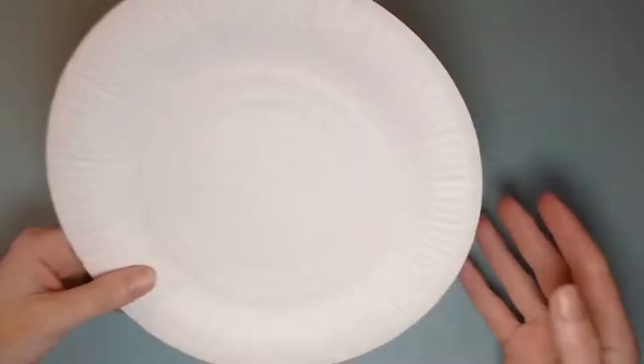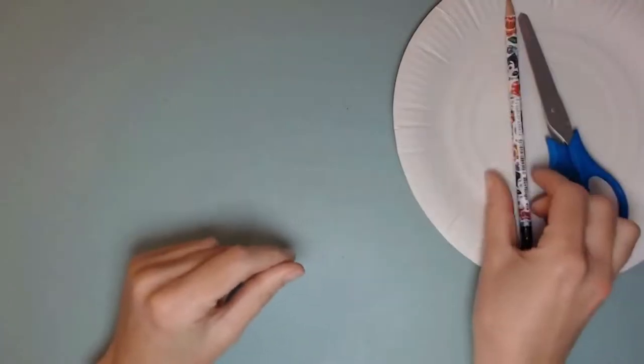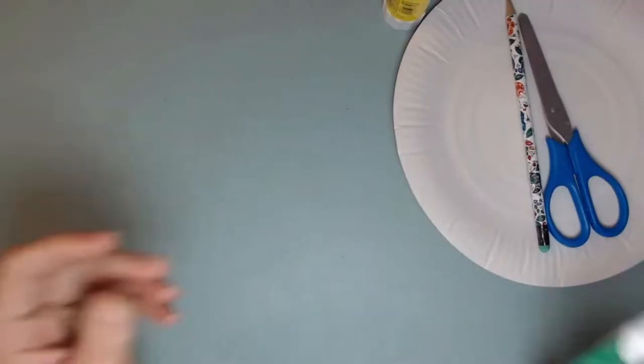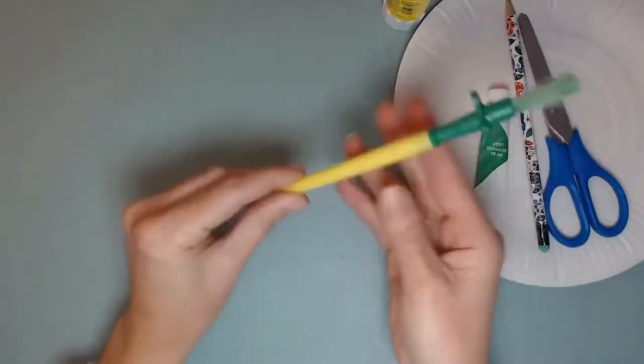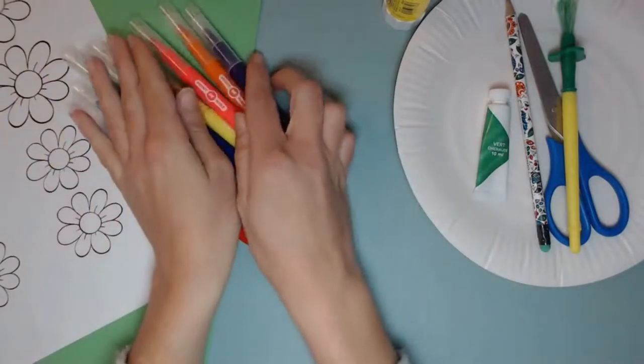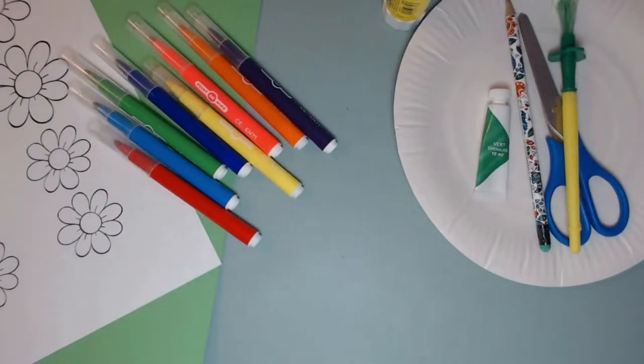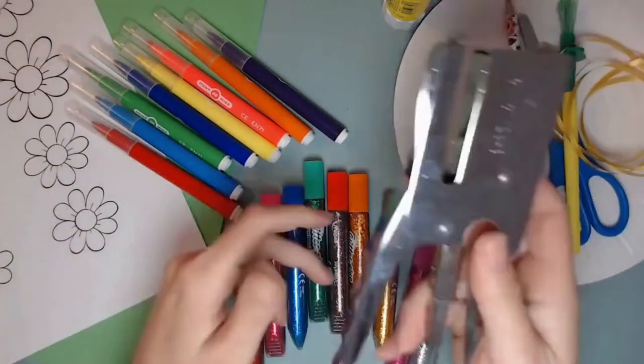For our project you'll need a white paper plate, a pair of scissors, a pencil, glue, green paint, a paintbrush, A4 green paper, eight flower templates, some brightly colored markers, some glitter glue, ribbon, as well as a stapler.